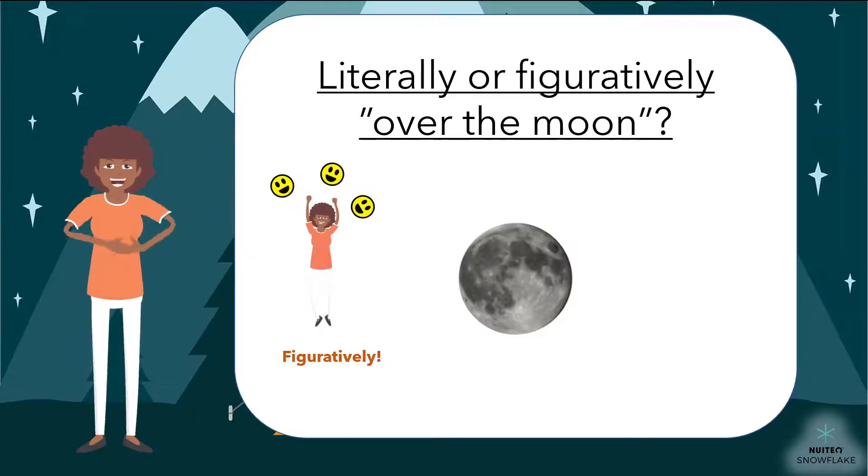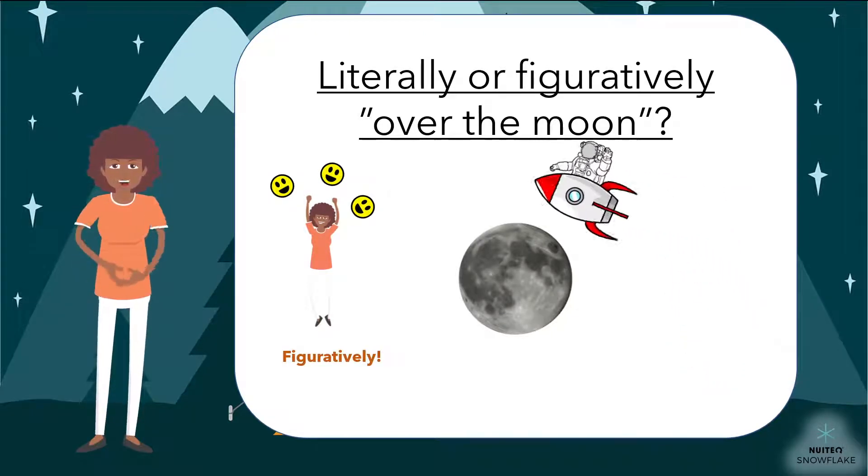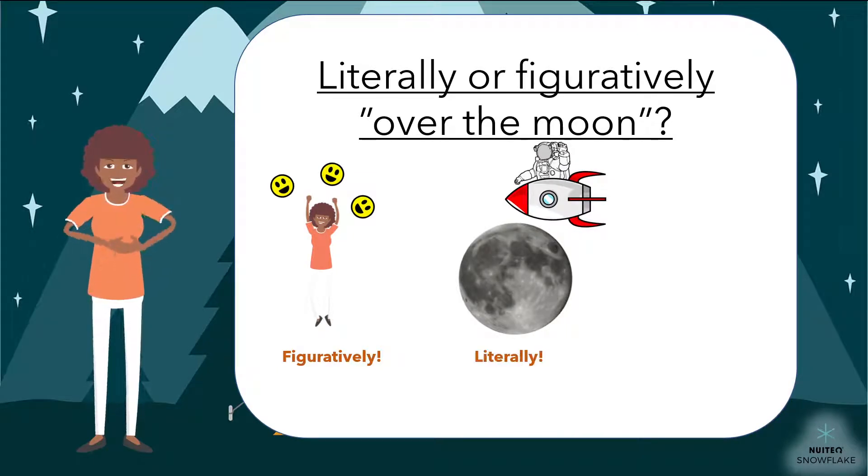But if an astronaut on their way to Mars said I will soon be over the moon, he or she actually means that they are very close to the moon and will soon be higher up in the sky than it is. They use the words literally.